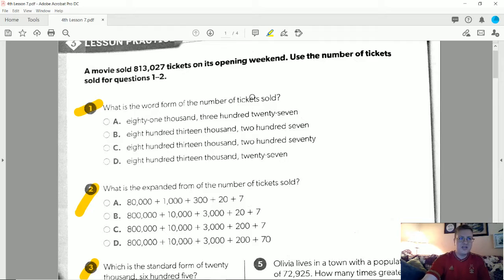Number one and number two are using this question up here, so 813,027 tickets. Number one, what is the word form of the number of tickets sold? It would be 813,027, that matches letter D.